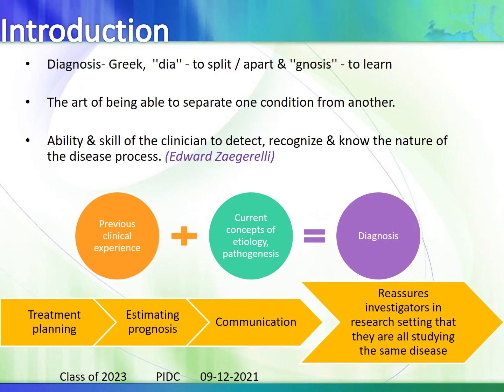The word diagnosis is a Greek word — 'dia' means to split and 'gnosis' means to learn. It is the art of being able to separate one condition from another. Edward Zaggerly correctly said it is the ability and skill of the clinician to detect, recognize, and know the nature of the disease process, requiring previous clinical experience along with current concepts of etiology and pathogenesis. Practical purposes of diagnosis include treatment planning, establishing prognosis, communication, and reassuring investigators in research that they are studying the same disease.